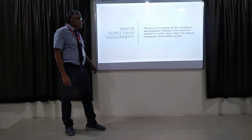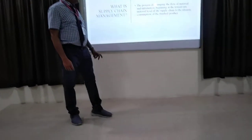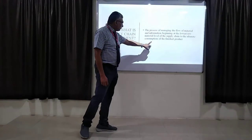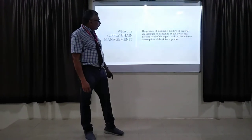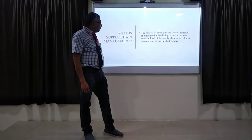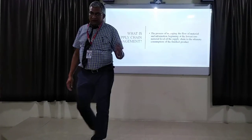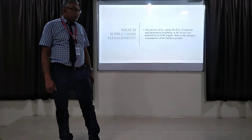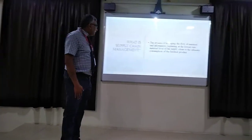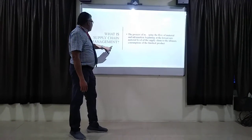The definition of supply chain management is the process of managing the flow of material and information, beginning at the lowest raw material level of the supply chain to the ultimate consumption of the finished product. The material coming from the factory — that is incoming material to outgoing material — the entire flow is supply chain management, where you have a series of movement of materials reaching the ultimate customer.